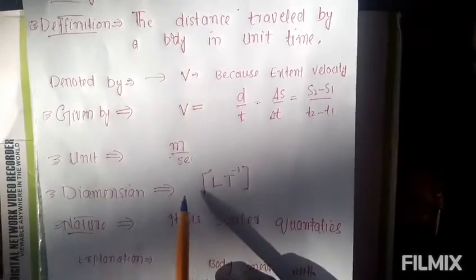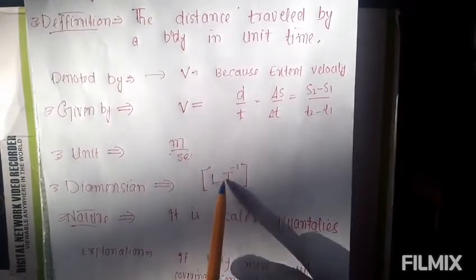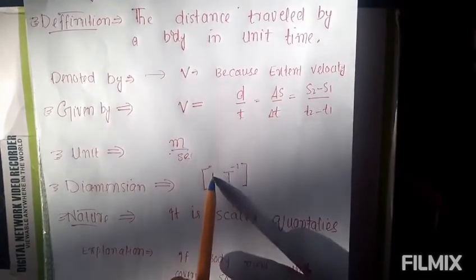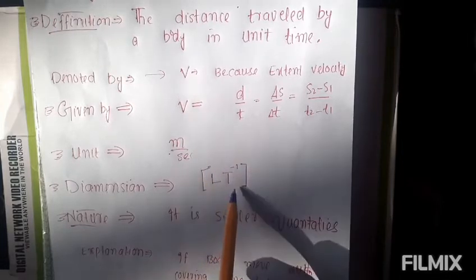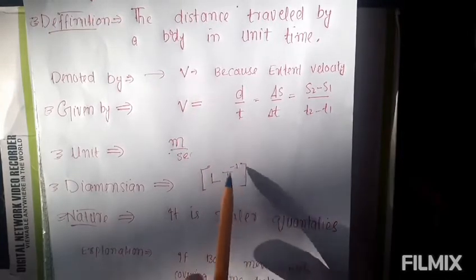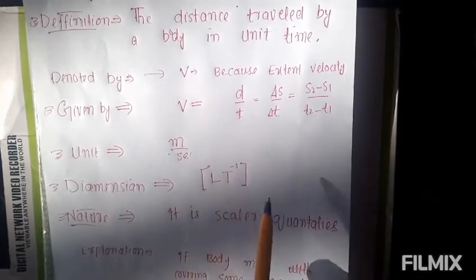Now come to the dimension. What is dimension? So the dimension of speed is length, so it is length meter we use in length, and second. So the unit of time is second, so capital T and minus 1. Because it is under, when it go to the above region it will become minus 1.